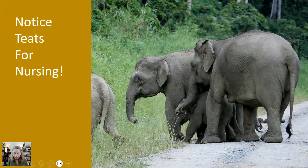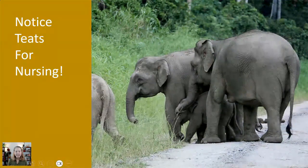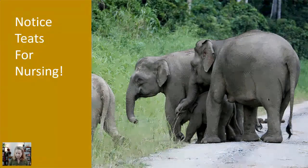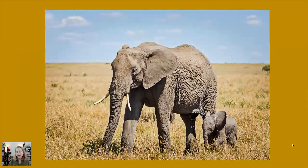Earlier in the day, before these elephants walked across the road, she was nursing this baby — it was so cute. There's a mama with her baby, and those babies are dependent on their mothers for quite a long time because it takes a long time for them to learn how to use that trunk and understand their place in society, because elephants have quite complex societies with lots to learn.